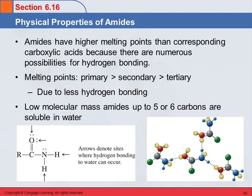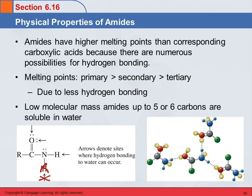Now, when you substitute on this nitrogen — this is a primary amide, so it's got two hydrogens here that can engage in hydrogen bonding. If you substitute one of these for an alkyl group so that you get a secondary amide, now you can have no hydrogen bonding there. You've eliminated one of the sites of hydrogen bonding, so the melting point goes down. If you make it into a tertiary amide, there's no hydrogen bonding possible between amide molecules because there's no hydrogens on that nitrogen anymore.